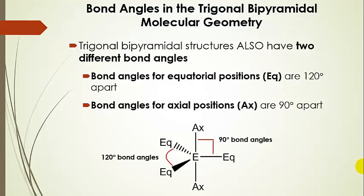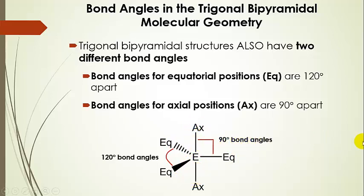There are two different bond angles. Equatorial positions are 120 degrees apart — there's a 120 degree bond angle between each equatorial atom, all the way around, just like the trigonal planar geometry, except now we have two other atoms bonded perpendicular to that plane. The bond angle between the equatorial atoms and the axial atoms is only 90 degrees, which is smaller than the 120 degree bond angles for the equatorial atoms.